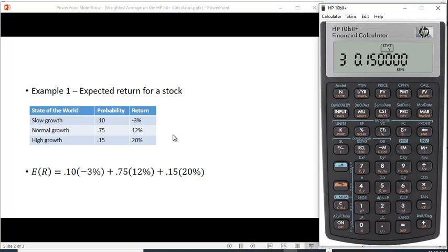To calculate the average, just hit this downshift key and this X bar W comma B, and it turns out to be 11.7%. Which seems reasonable, right? Someplace between minus 3% and 20%, pretty close to these higher numbers since this makes up 90% of the value. So that looks good.